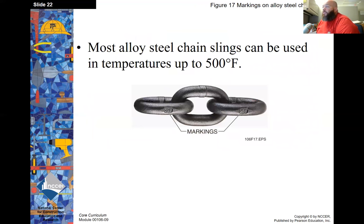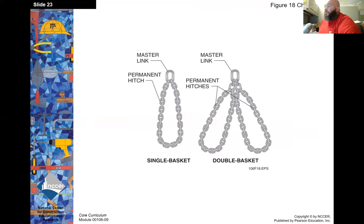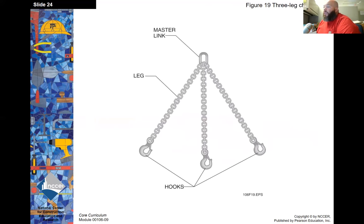Most alloy steel chains can be used in temperatures up to 500 degrees Fahrenheit. Markings on the chain show the grade. For chain slings, there's a single basket on the left and a double basket on the right, as well as a three-legged chain bridle.